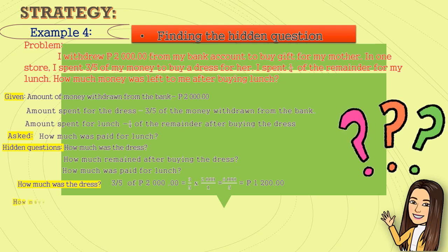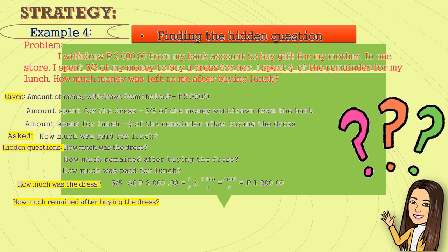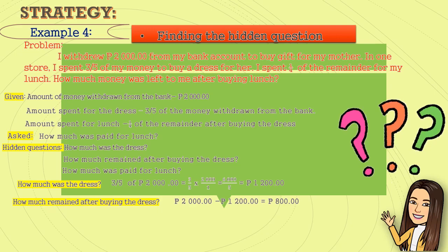Next, how much remained after buying the dress? That is two thousand pesos minus one thousand two hundred pesos. That is equal to eight hundred pesos.